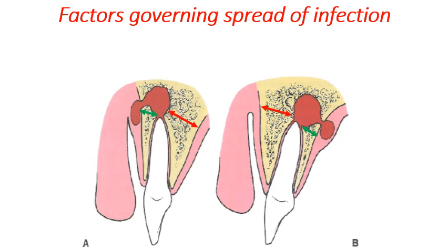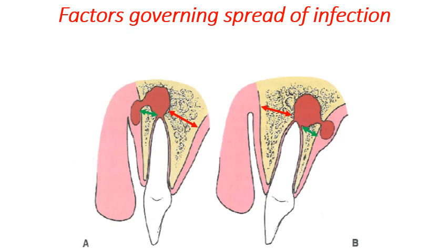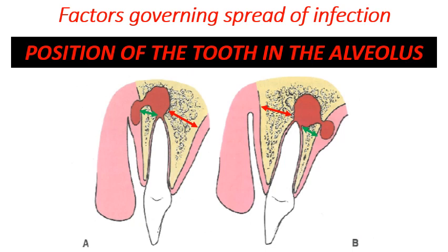There are different factors governing the spread of infection. First, the position of the tooth in the alveolus: the apex may be nearer to the buccal or labial plate of bone — and since pus seeks the path of least resistance, it will perforate buccally or labially causing a buccal vestibular abscess. Conversely, if the apex is tilted toward the palatal plate of bone, pus will perforate on the palatal side causing a palatal abscess.